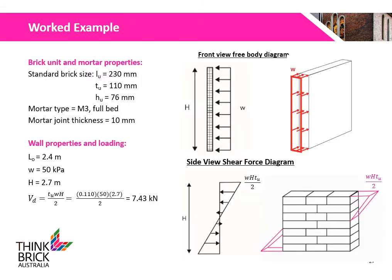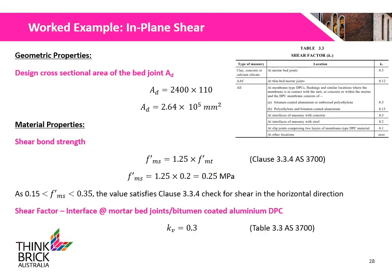The wall uses standard brick units with full bedding of M3 mortar. With a 50 kPa in-plane loading, the shear force acting on the wall is calculated to be 7.43 kN. The shear diagram is shown on the right. The design cross-sectional area AD is calculated to be 2.64 × 10⁻⁵ mm². The shear bond strength of the masonry F-MS is calculated to be 0.25 MPa, which satisfies the check for shear in the horizontal direction as stated in Clause 3.3.4 of AS3700.